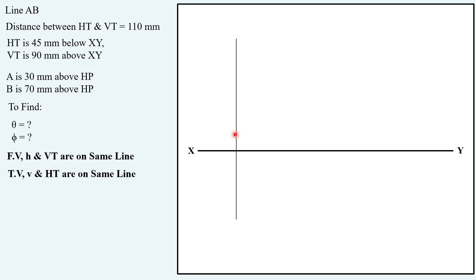If you take this vertical projector as projector of endpoint A you will not find the solution. This is the first thing you have to remember in a question where distance between HT and VT is given to us. You don't have to start with end point of the line; you have to start with the trace.